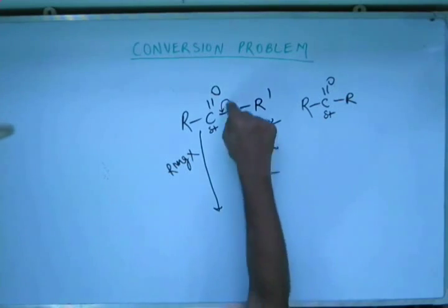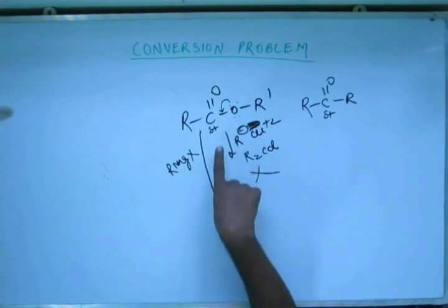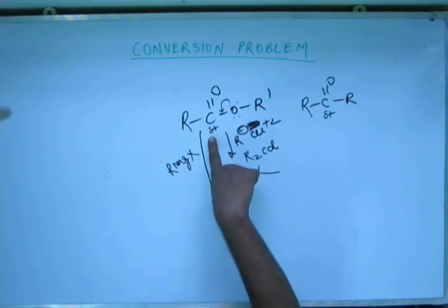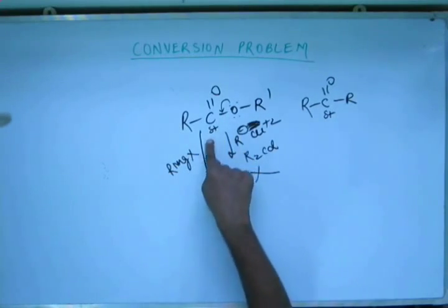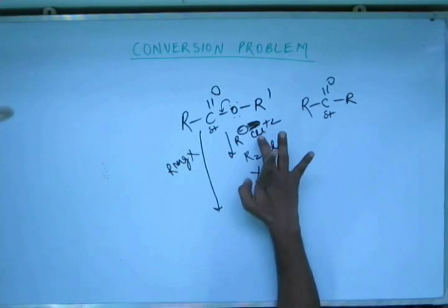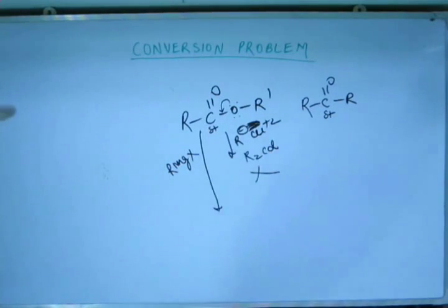That means if you have any electron giving atom attached to carbon, then that will decrease the reactivity of this carbon because of electron donating nature and that will decrease the reactivity of whole of the compound and this dialkyl cadmium or Gilman's reagent will not react with this ester.